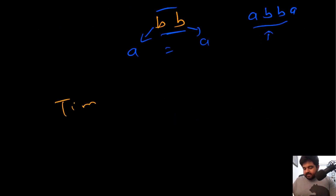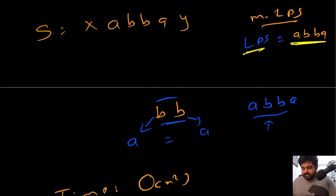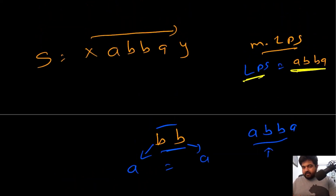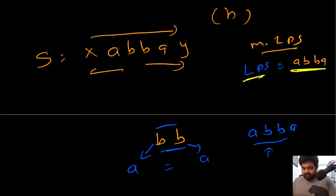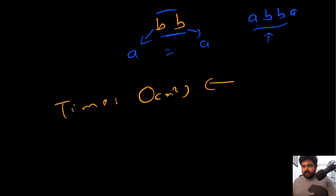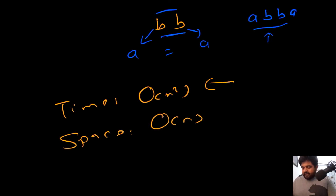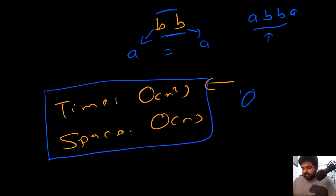The time complexity of this expand-from-center approach is O(n²): we iterate over every character to check whether it is the middle of the longest palindromic substring — that's O(n) — and for each we may expand up to O(n) times in the worst case. The space complexity is O(n) to keep track of the characters. This is a much better improvement compared to the brute force O(n³) approach.